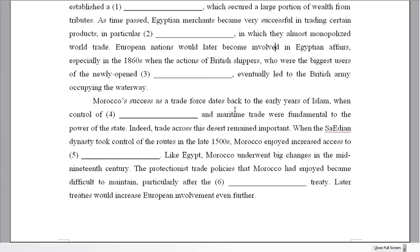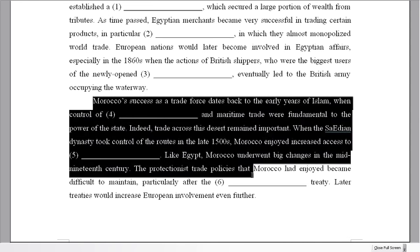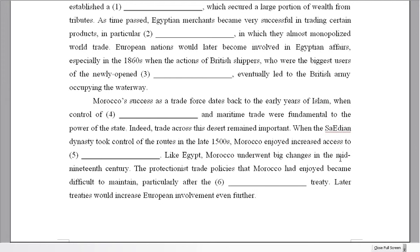Therefore, looking at paragraph two, I can see Morocco, Morocco, Morocco, Morocco. So I was probably correct — the first paragraph is all about the Egypt text, and these examples are about Morocco.